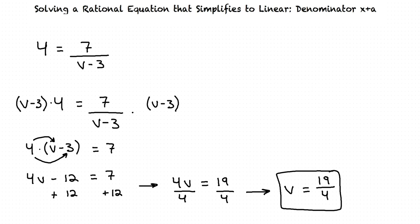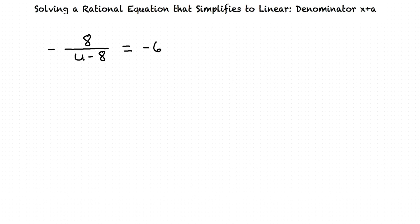Let's do one more example. Solve the rational equation for u. Our first step is to multiply both sides by the denominator. So what are we going to multiply both sides by? We'd multiply by u minus 8, right? Yeah, that's right.